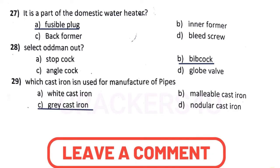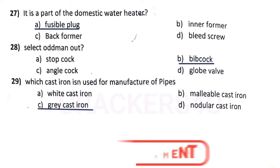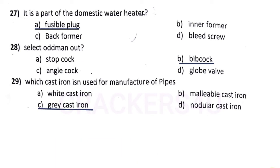Question number twenty-seven: which cast iron is used for manufacture of pipes — answer option C, gray cast iron.